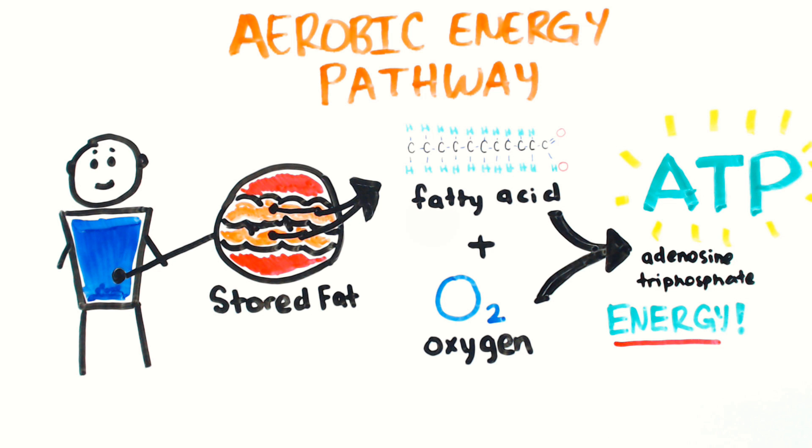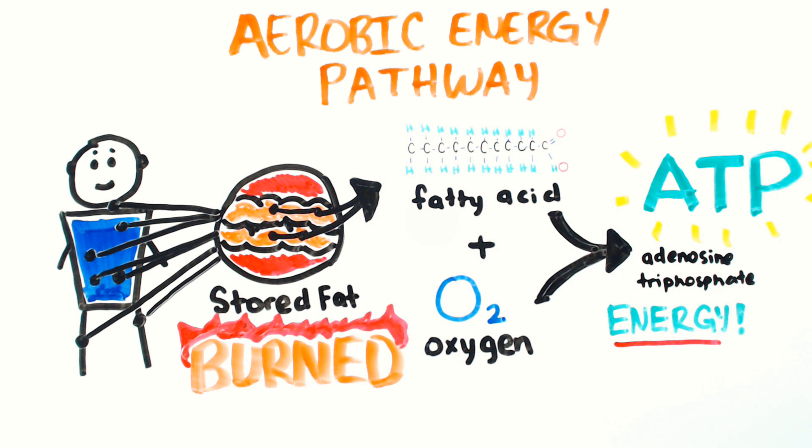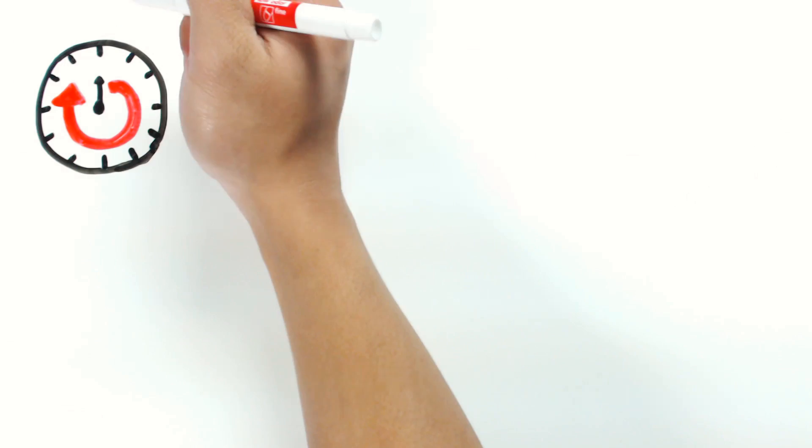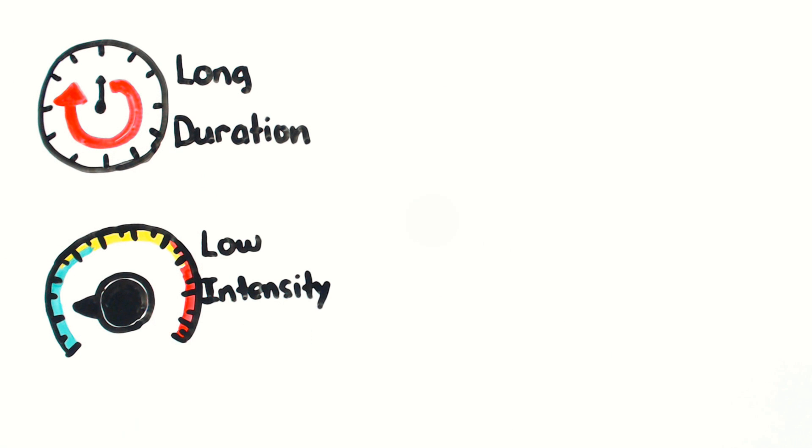As long as this pathway is utilized, more and more fat will be burned. Early science believed that the best way to activate this pathway is by performing long-duration, low-intensity exercises such as long-distance jogging, cycling, or swimming.